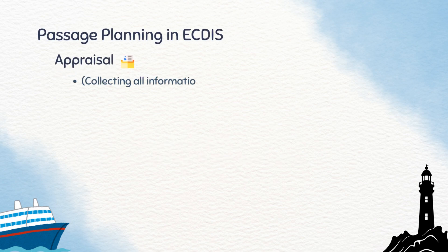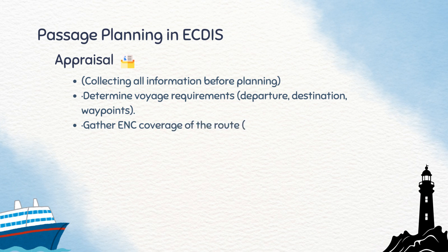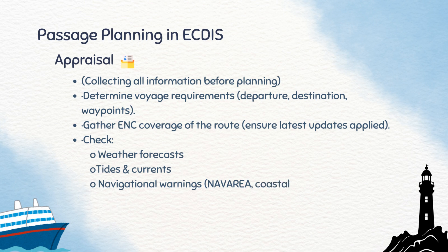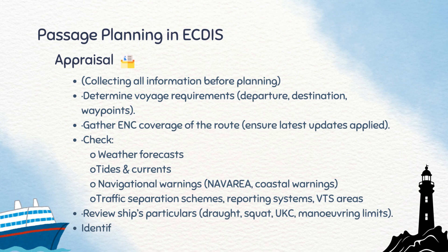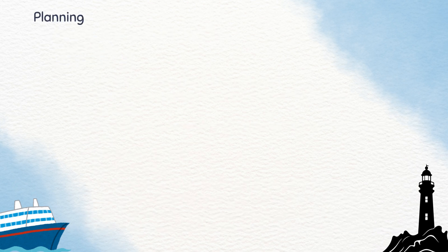Passage Planning in ECDIS follows the same four stages recommended by IMO, but ECDIS makes them smarter and safer. First comes Appraisal, where we gather Voyage Requirements, ENC Coverage, Weather, Tides, Navigational Warnings, Traffic Schemes, and Vessel Particulars like Draft and UKC. This helps us identify no-go areas early.